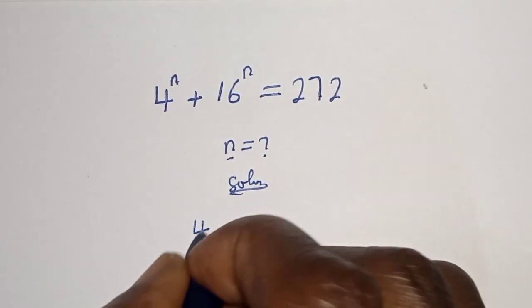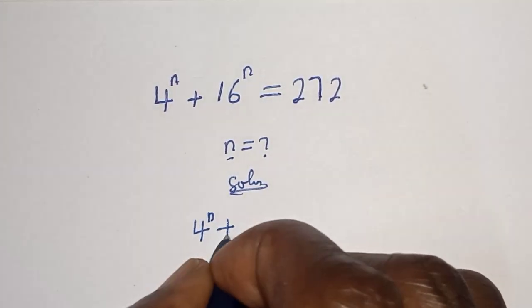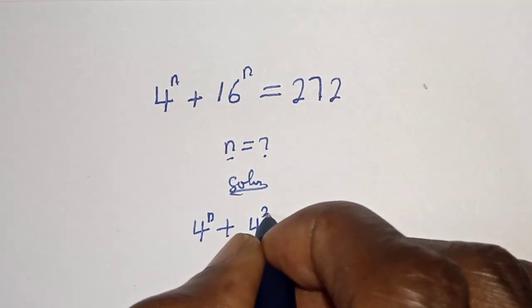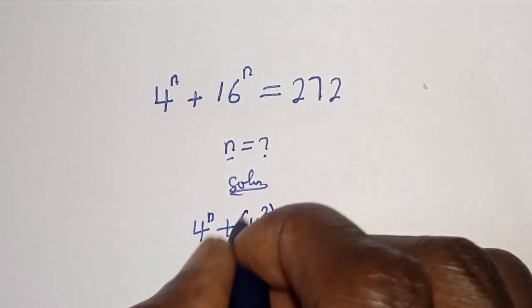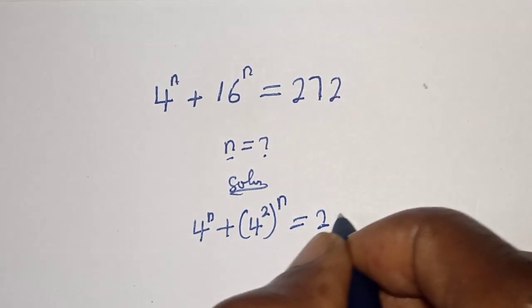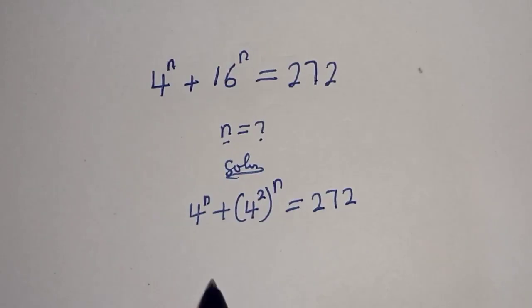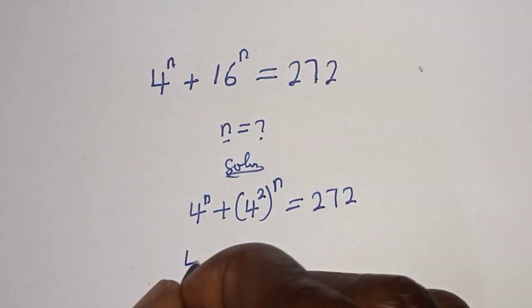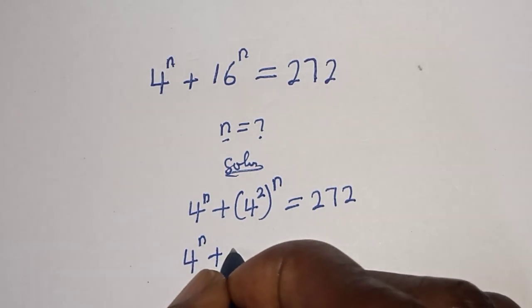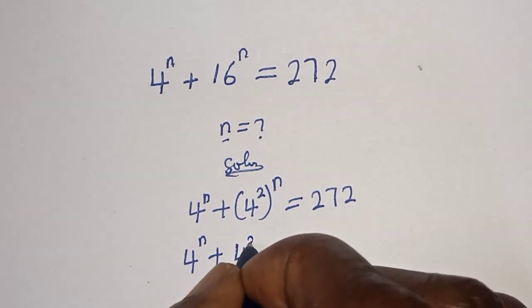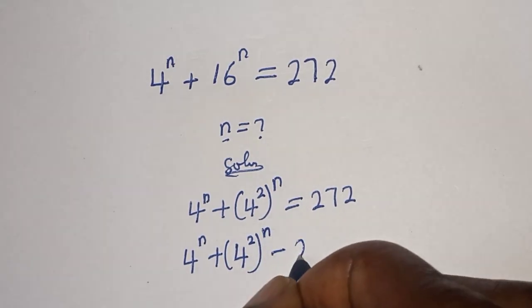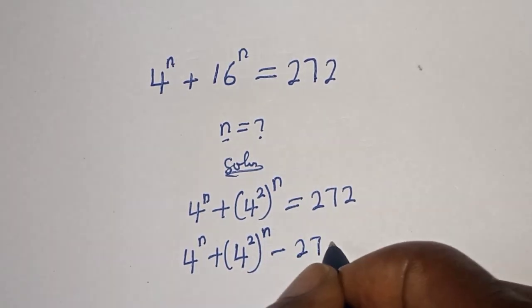For the solution, we have 4 raised to power n plus 16 raised to power n. Since 16 is 4 squared, we can write 16 raised to power n as 4 squared raised to power n. This gives us 4 raised to power n plus 4 squared raised to power n minus 272 is equal to 0.